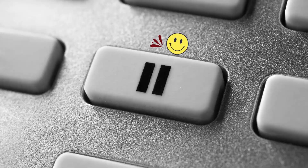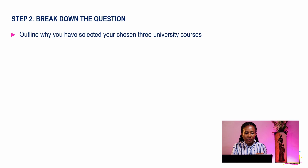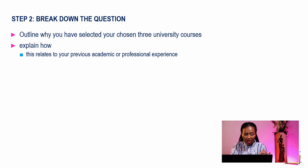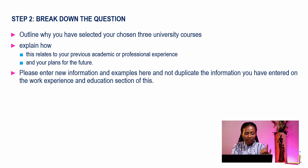That's step one. For step two, break down the question. Pause the video now and try to break down the question as much as you can. Welcome back. Breaking down the question, Chevening asks us to: outline why you selected your three university courses; explain how this relates to your previous academic or professional experience and your plans for the future; and enter new information not duplicated from the work experience and education sections. Breaking down the question helps us digest it in piecemeal, not be overwhelmed, and not miss anything we need to add.